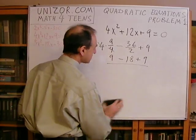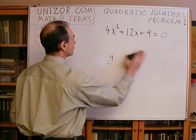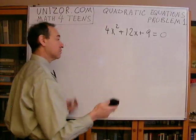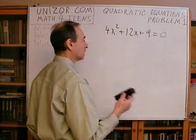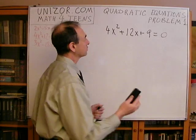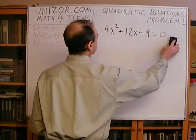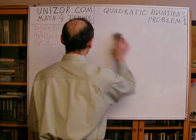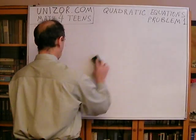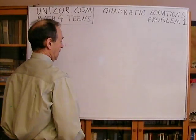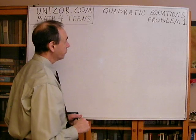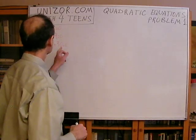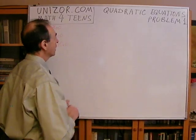That's an example of an equation which has only one solution — we use the term double solution, but it's only one number. That was example number 2, and this is number 3: 3x squared minus 18x plus 13 equals zero.